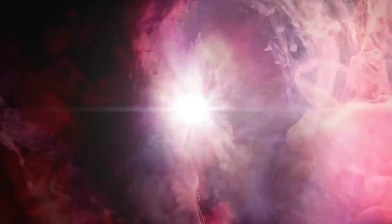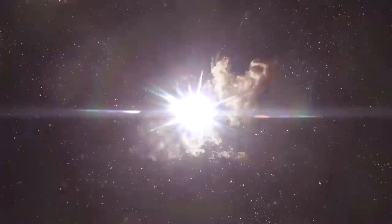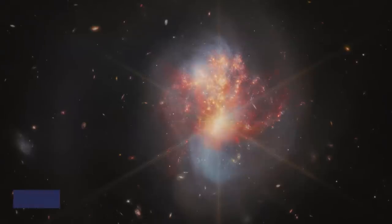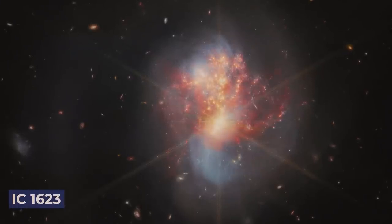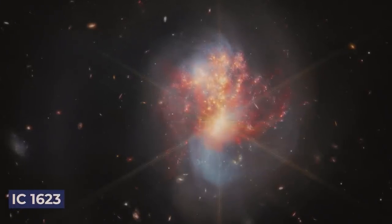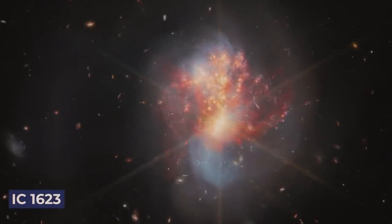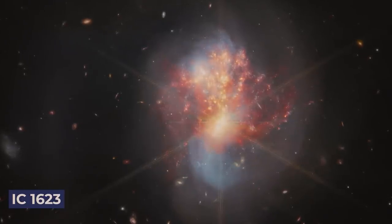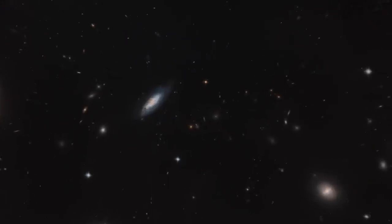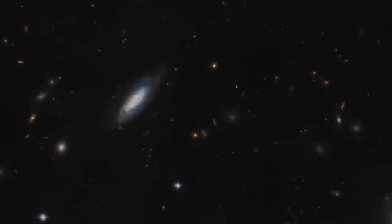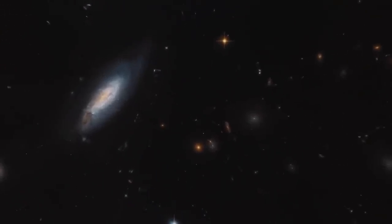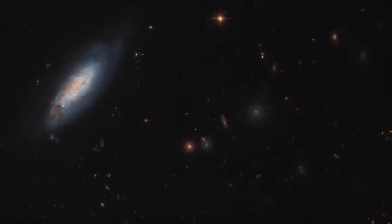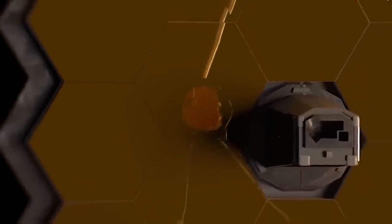Recently, Webb turned its gaze toward two colliding galaxies called IC 1623, and it witnessed something truly amazing. Despite the galaxies being about 270 million light-years away from us, Webb's advanced infrared technology allowed it to peer through the thick dust and reveal a spectacle hidden from our reliable Hubble telescope. What did it see? An area of intense star formation, with stars being produced at a rate 20 times faster than in our own galaxy.